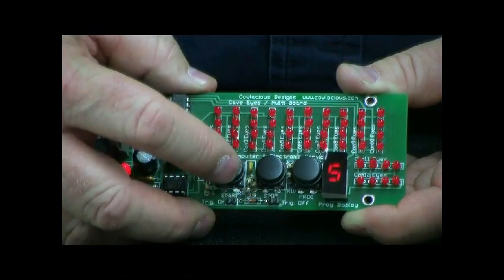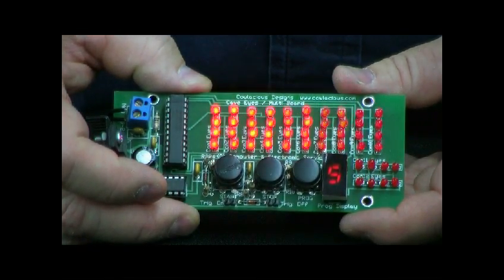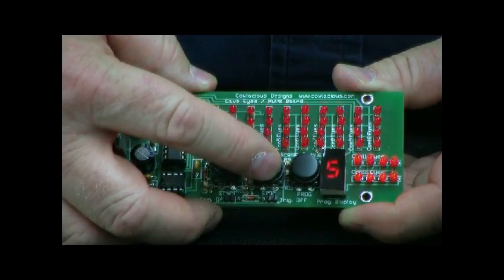Then program five, that gives you just a flashing on and off sequence. Again, that speed can be adjusted.